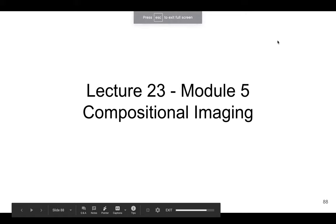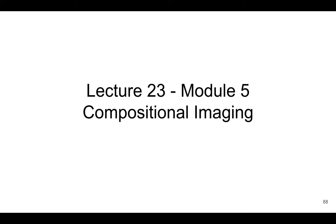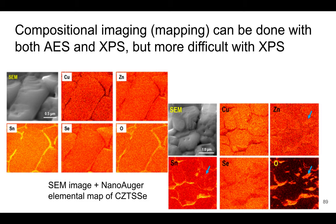Another thing we can do with XPS and AES is compositional imaging. This is very similar to what we talked about with SEM-EDS, where we map out the composition of the surface and are able to determine if there are different phase regions or if there's a certain element on the surface — on the edge, wherever it is. It gives us a map of where the composition is. We can do similar things with XPS and AES; this is called compositional imaging or mapping.